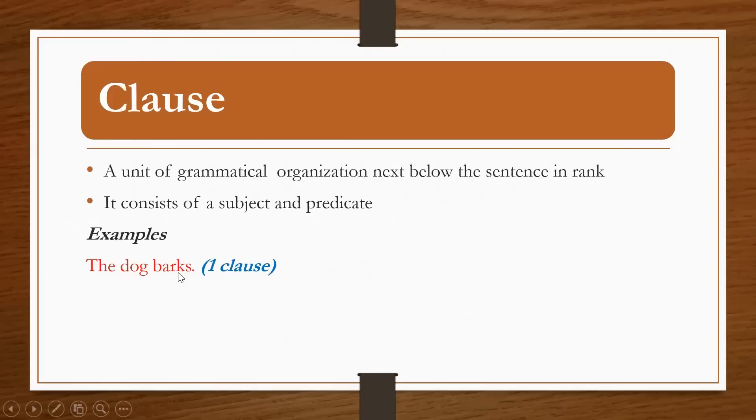The dog barks when the postman arrives. Here is one sentence but there are two clauses in it. The first clause is 'the dog barks.' The other clause is 'when the postman arrives.'